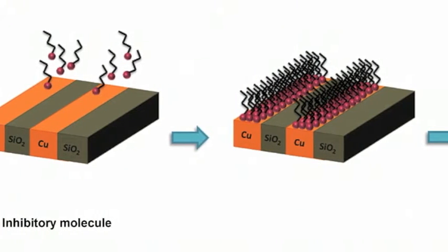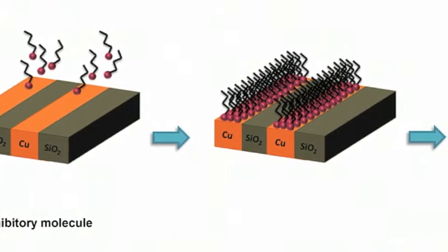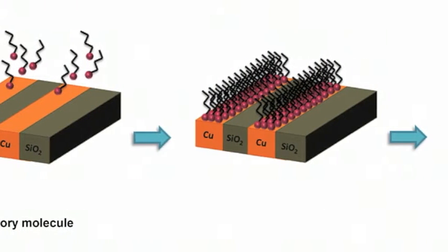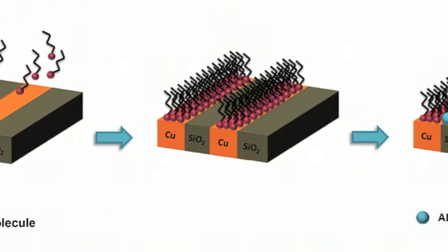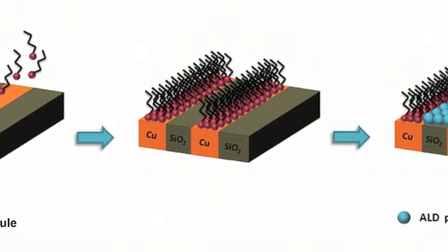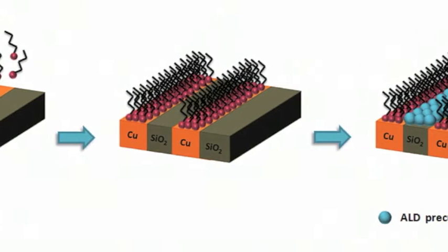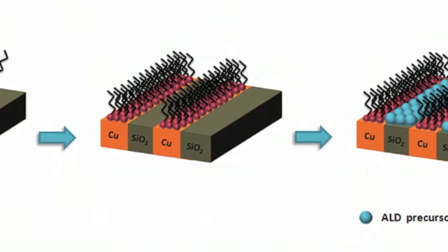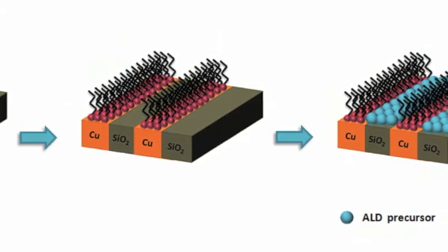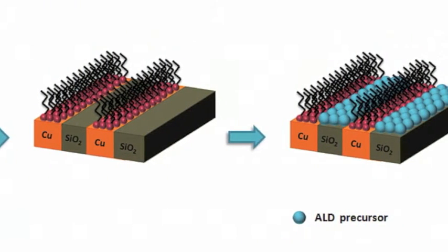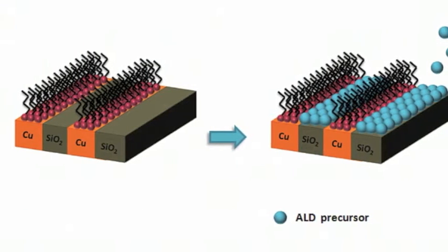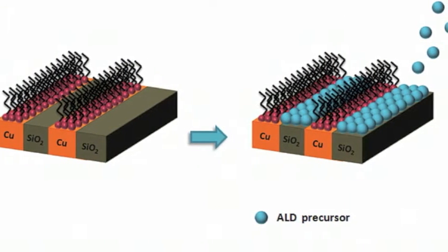When we want to perform area-selective ALD on a metal-dielectric pattern, we use self-assembled monolayers which bond preferably to metal parts of the substrate. These self-assembled monolayers create a blocking layer against ALD. When we perform ALD, the areas that have been blocked are protected, and the ALD is deposited only on the dielectric parts of the pattern.